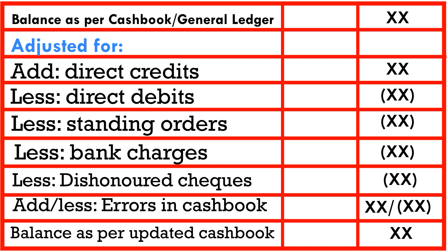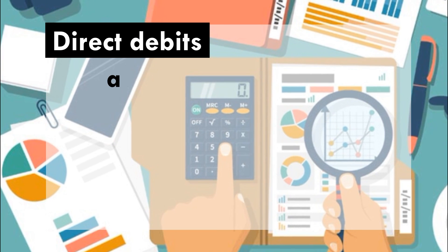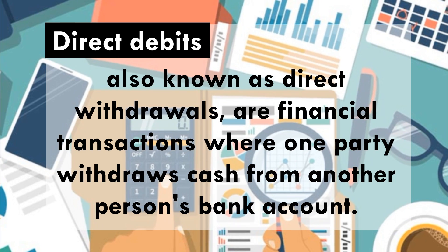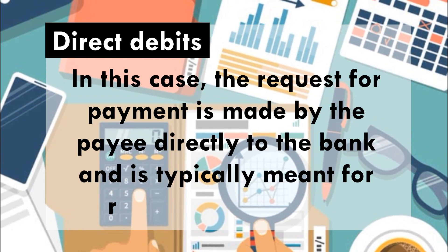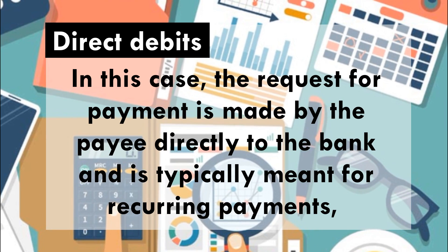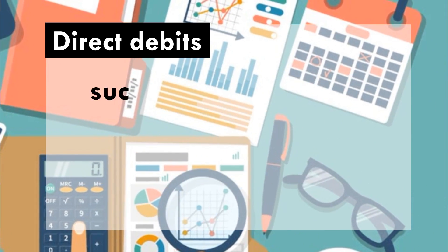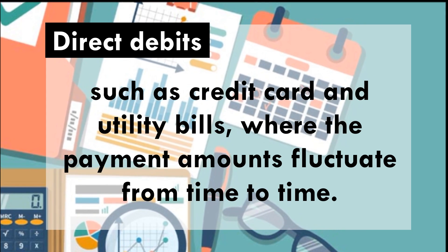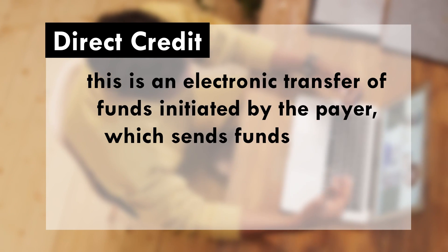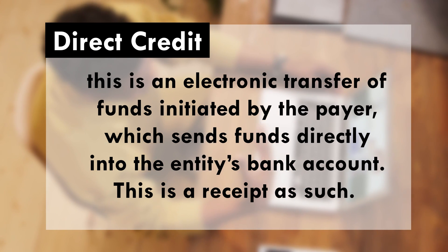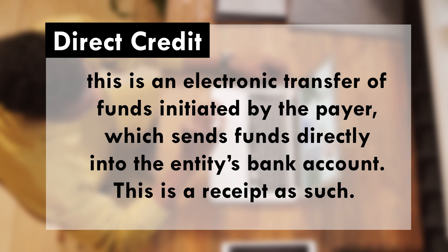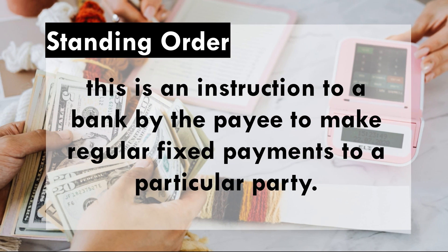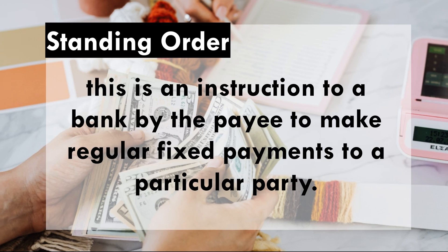Please note that direct debits, also known as direct withdrawals, are financial transactions where one party withdraws cash from another person's bank account. The request for payment is made by the payee directly to the bank and is typically meant for recurring payments, such as credit card payments and utility bills where the payment amounts fluctuate from time to time. Direct credit is an electronic transfer of funds initiated by the payer, which sends funds directly into the entity's bank account — so this is a receipt. A standing order is an instruction to a bank by the payee to make a regular fixed payment to a particular party.